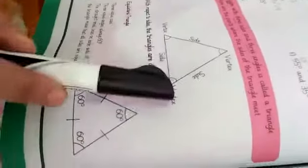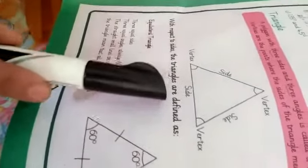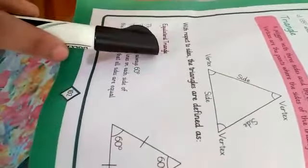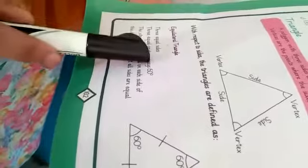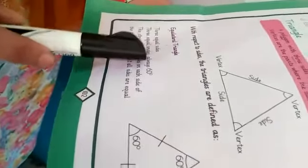3 common points are called vertices. So with respect to sides, the triangles are defined as equilateral triangle. 3 sides equal, 3 equal angles always 60.